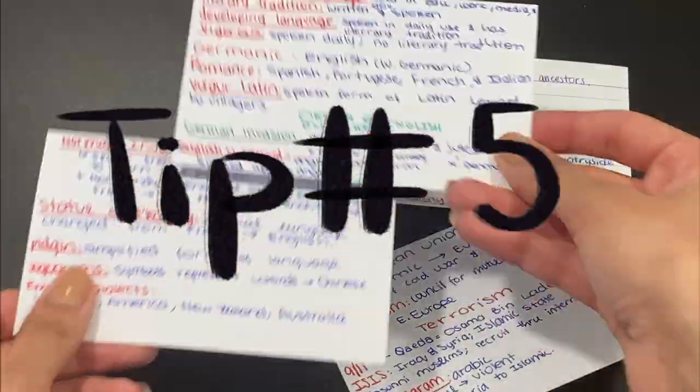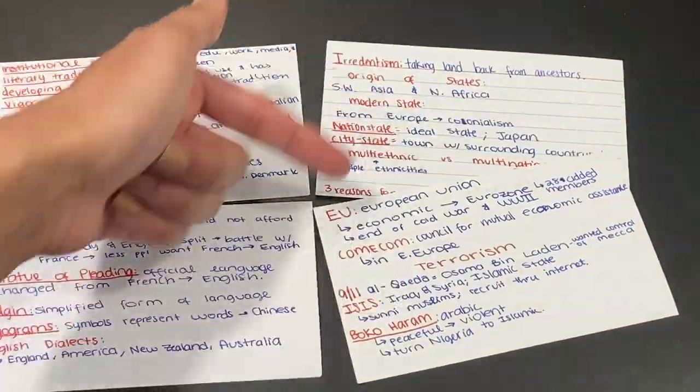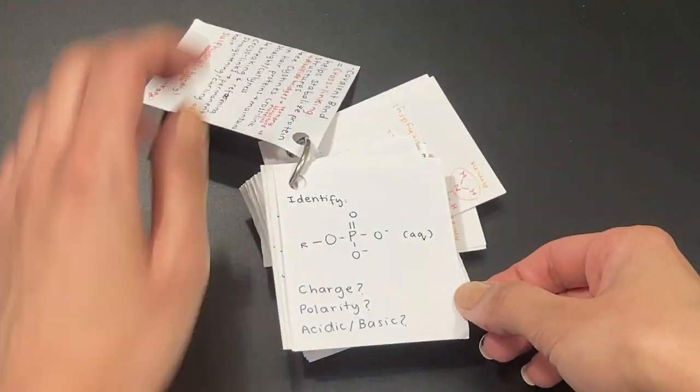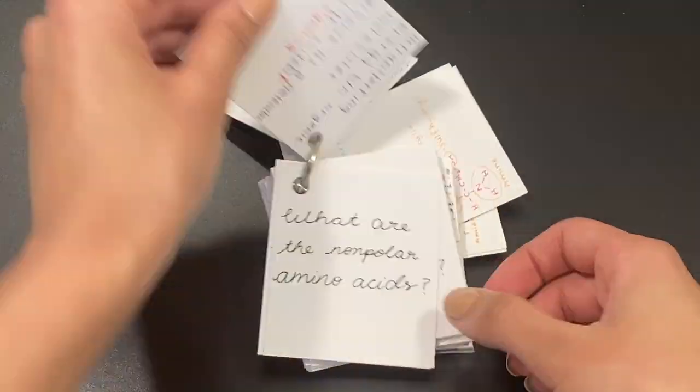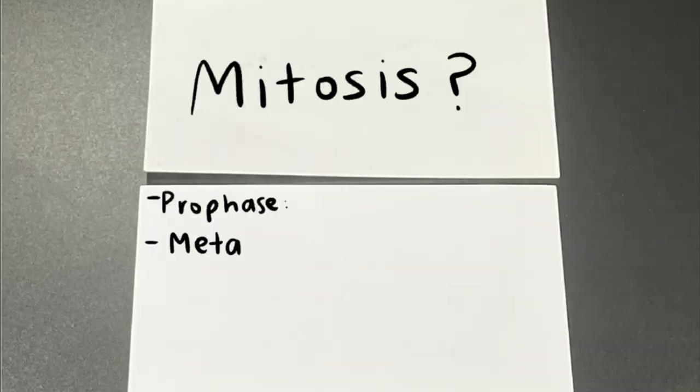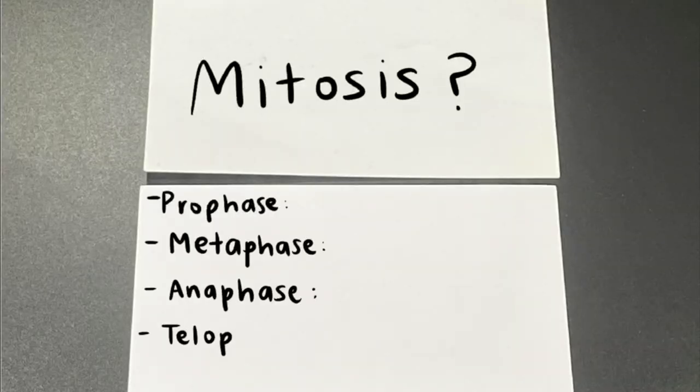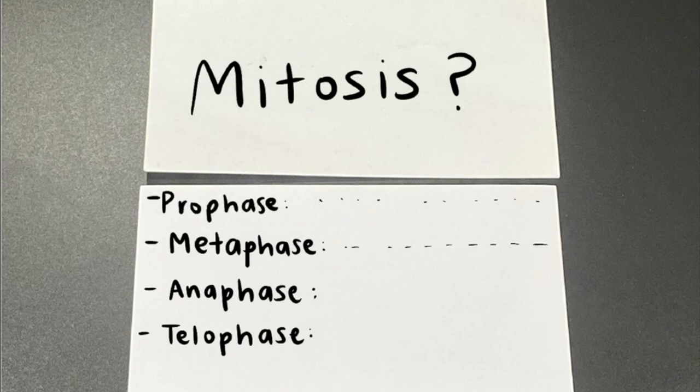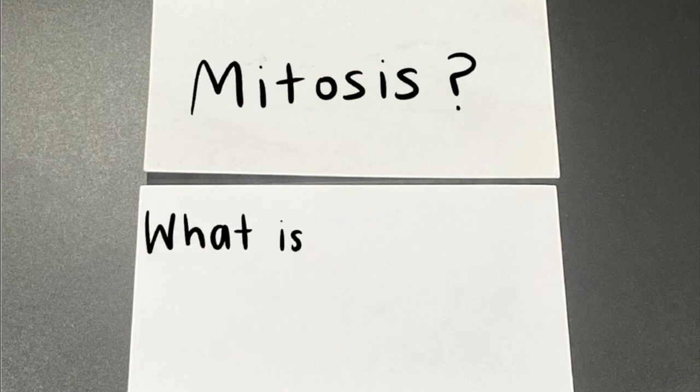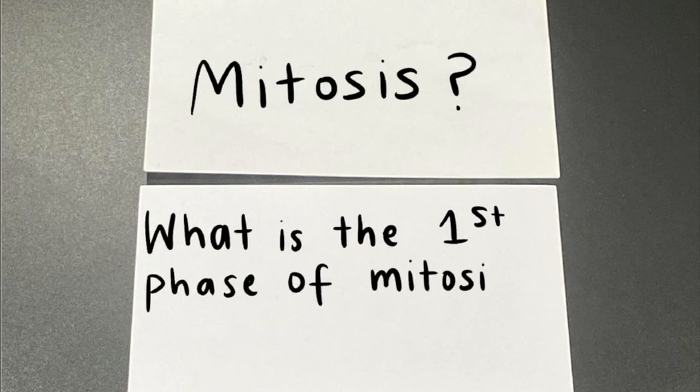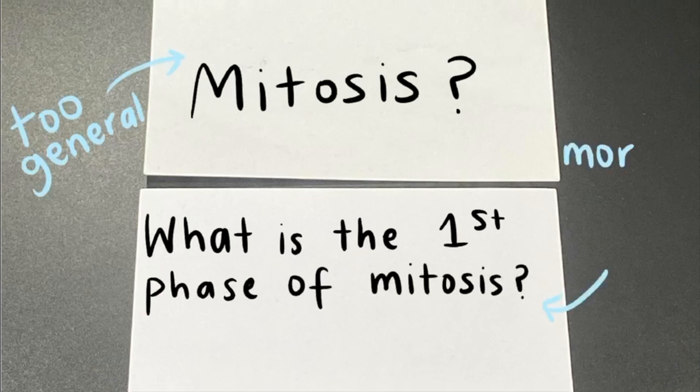Tip number five: do not try to cram everything onto one flashcard. Make sure that you make flashcards with only one question or one vocab word on them. For example, if we were talking about mitosis, instead of writing down mitosis question mark on the front of the card and then writing down all the different phases and all of their information on the back, simply write down what is the first phase of mitosis. This way, the question is more test-like and specific, which will already help you start preparing for the test.